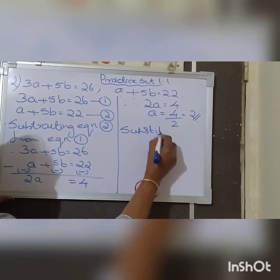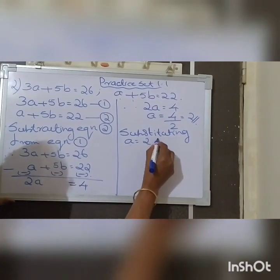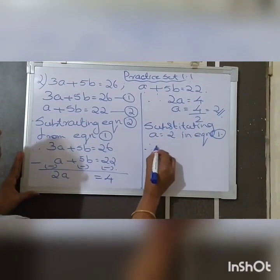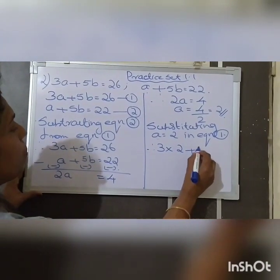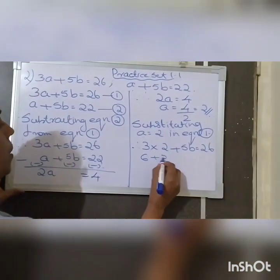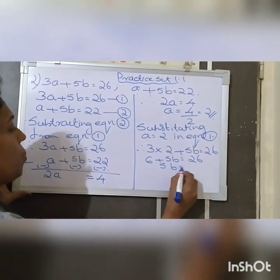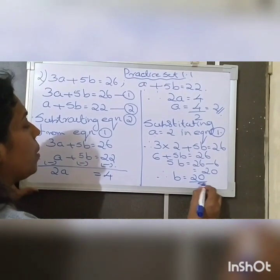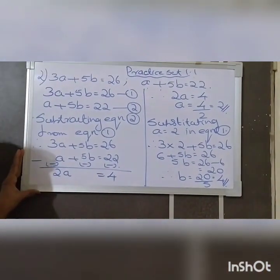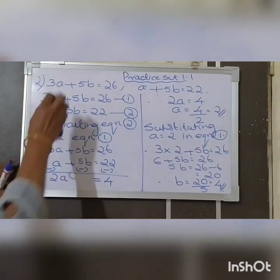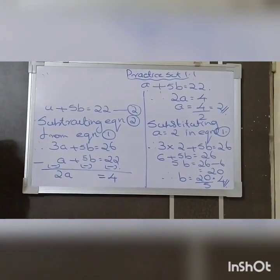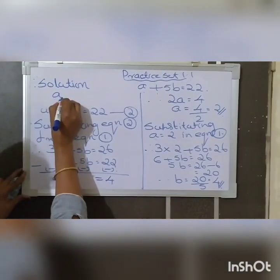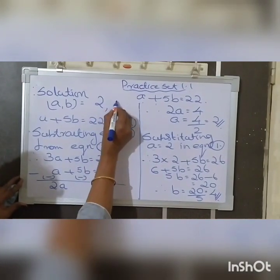Substituting A equals 2 in equation 1: 3 times 2 plus 5B equals 26, so 6 plus 5B equals 26. Therefore 5B equals 26 minus 6 equals 20, and B equals 20 divided by 5 equals 4. Therefore the solution is A equals 2, B equals 4.